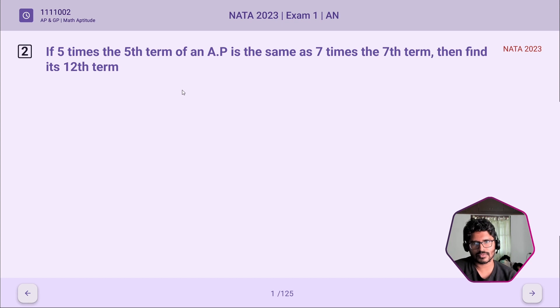This problem is an arithmetic progression oriented math aptitude question. The given data is 5 times the 5th term of the AP will be equal to 7 times the 7th term of the series. If this is the case, we need to find out what will be the value of the 12th term.